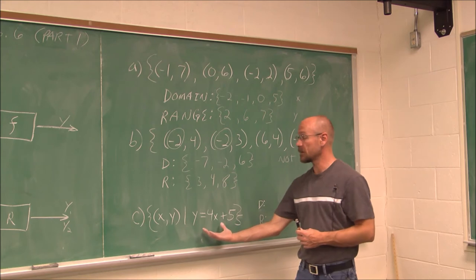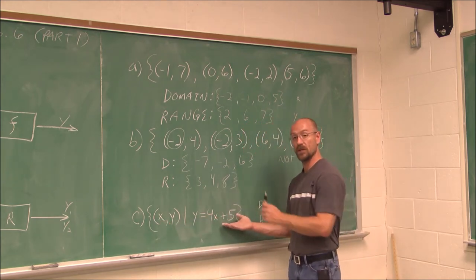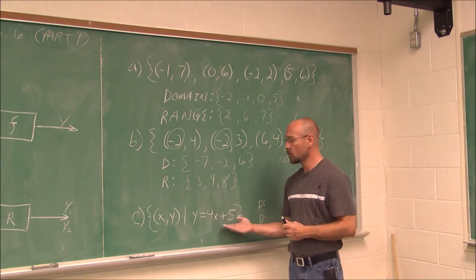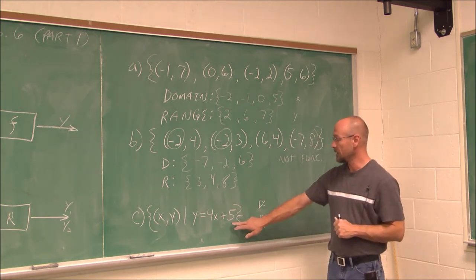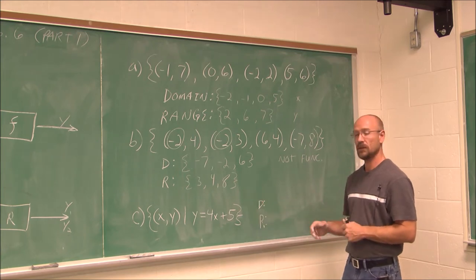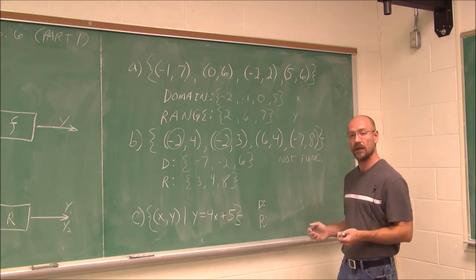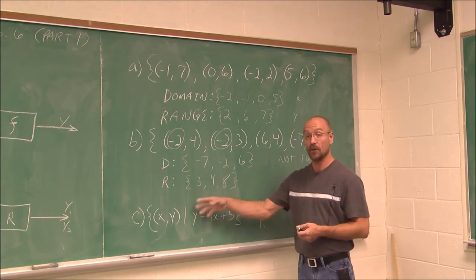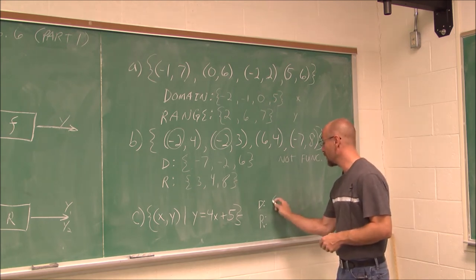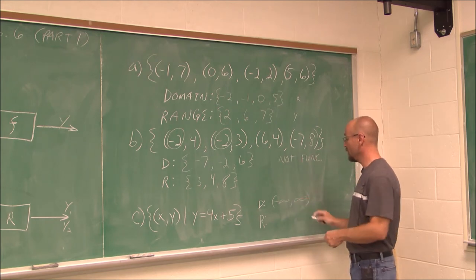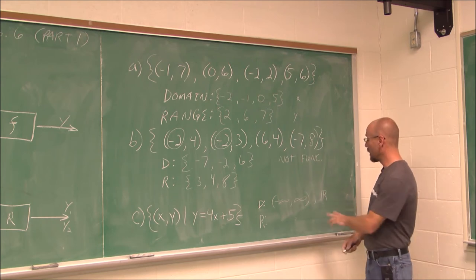Now, notice the set notation here. This says the ordered pairs (x, y) such that y equals 4x plus 5 — the equation we saw a little while ago. When determining the domain and range of this, we already established this is a function. All linear equations are functions except for one, which we'll discuss in the next video. What are the input values — what is the domain? What values can I put in for x? I can put in any value for x and get out some value for y. If I can put in any value of x, there are no domain restrictions. So it would be all real numbers — written in interval notation as (−∞, +∞). That is my domain.